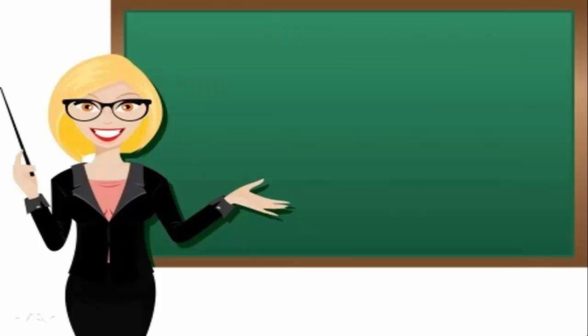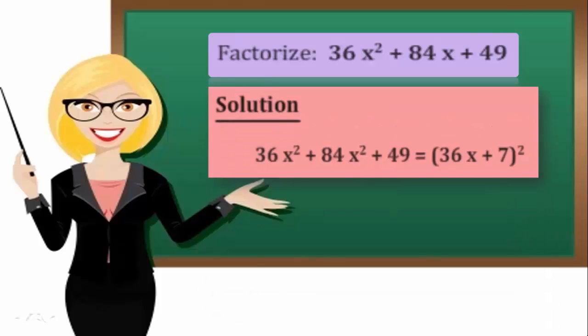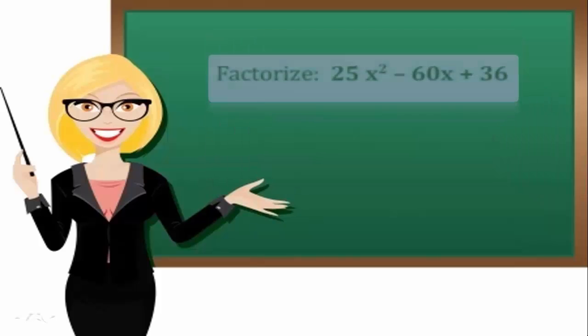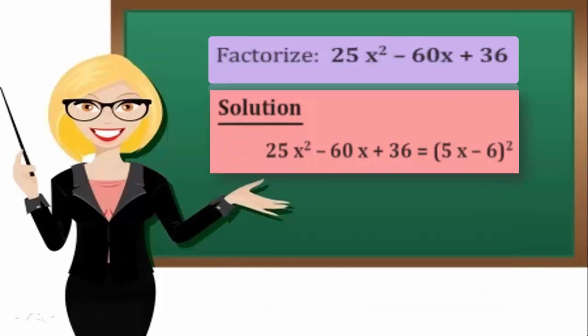Example 1: Factorize 36x squared plus 84x plus 49. Solution: (6x plus 7) all squared. Example 2: Factorize 25x squared minus 60x plus 36. Solution: (5x minus 6) all squared.